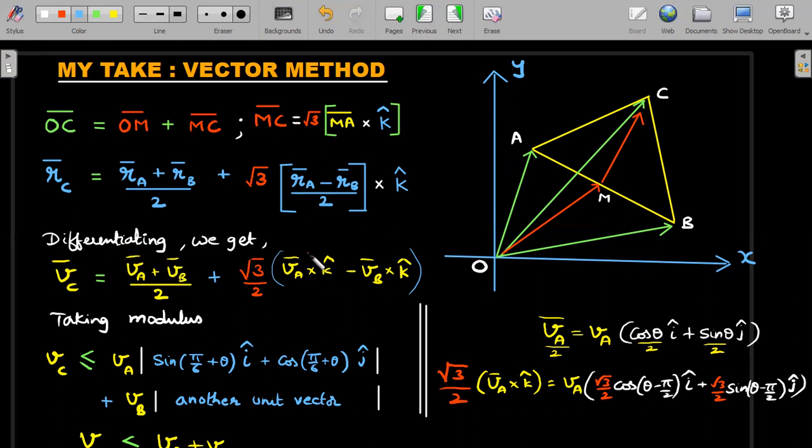Differentiating both sides we end up getting the velocity vectors this time, just like what we did in complex analysis but slightly different expressions that you're getting using cross products. Once you put vA and vB's cross products separately, now I'll try to take the modulus. Before I try to take the modulus and write these expressions, try to associate yourself with this side calculation.